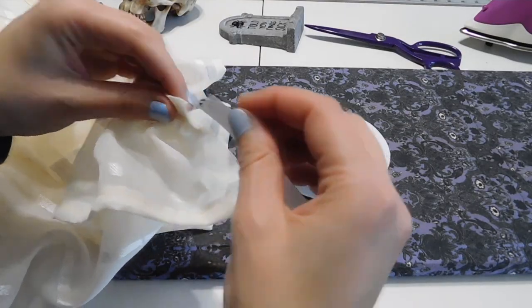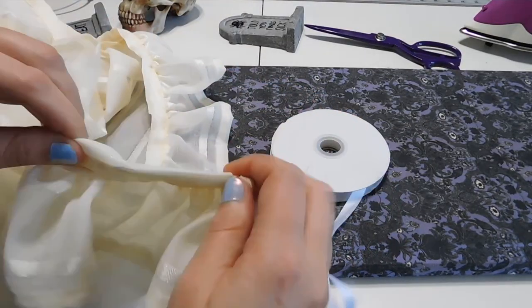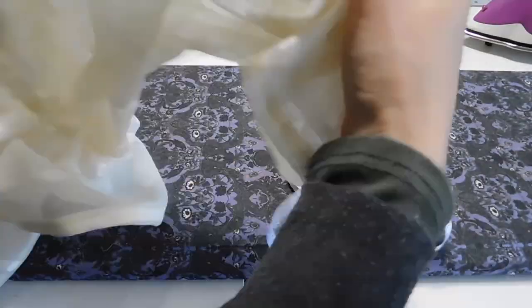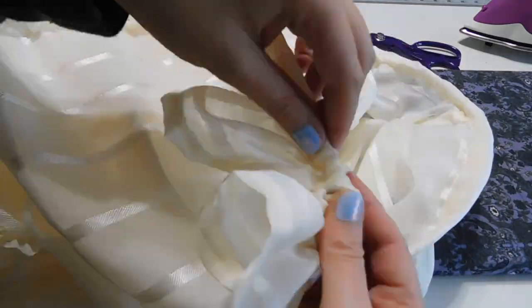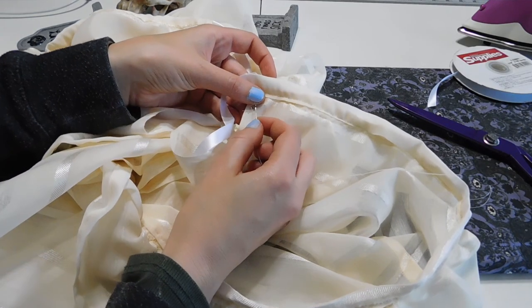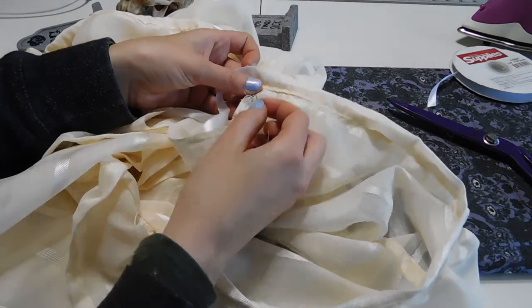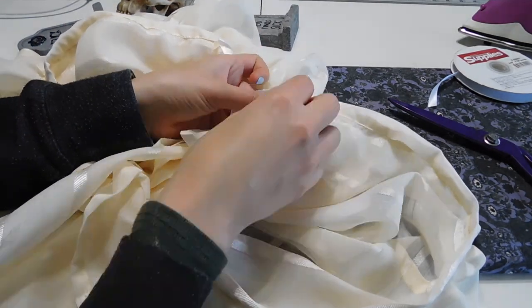The last thing to do is add ribbon to the binding strip by using a safety pin to guide the ribbon through all the way around. This is how I will gather the chemise down to fit over my bust. Then I will hand sew a hook and eye into the back for a little more security and the garment is finished.